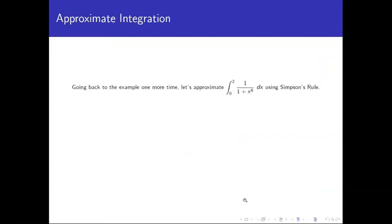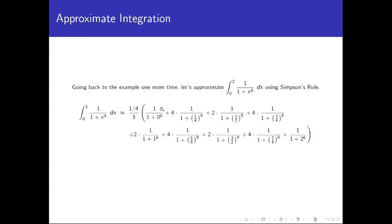Let's apply Simpson's rule to the same example. Delta x is still 1/4. We plug the endpoints of our intervals into the function. The coefficient pattern starts with 1, then alternates 4, 2, 4, 2, 4, 2, 4, ending with 1. The second-to-last interior coefficient must be a 4 — if you're ending on a 2 you've made an error. Multiplying by delta x over 3 and summing gives approximately 1.0422.